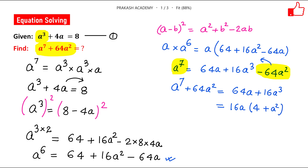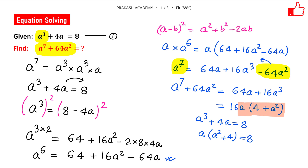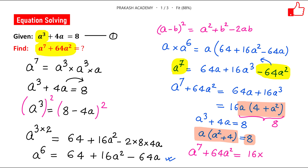Now if we rearrange equation 1 — which is a³ plus 4a equals 8 — and take a as common, we get a times (a² plus 4) equals 8. So we can plug this value in. Our expression becomes 16 multiplied by a times (a² plus 4), and since that equals 8, we get a⁷ plus 64a² equals 16 times 8, which is 128.